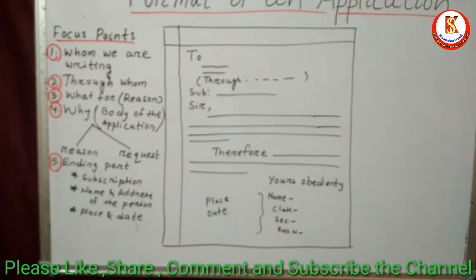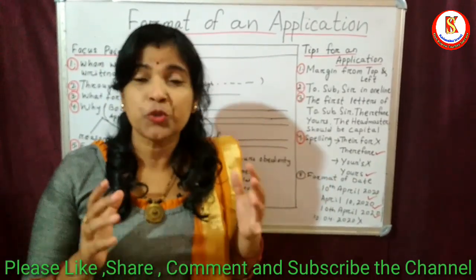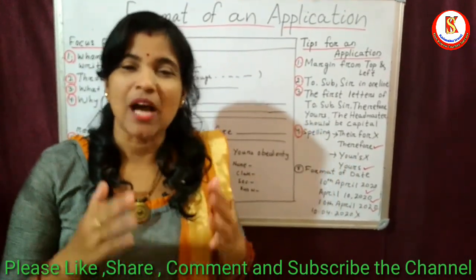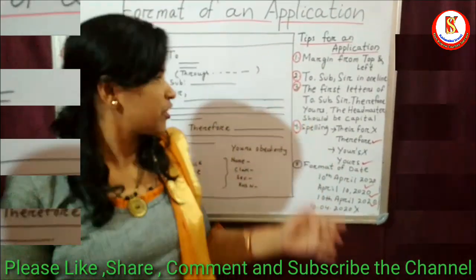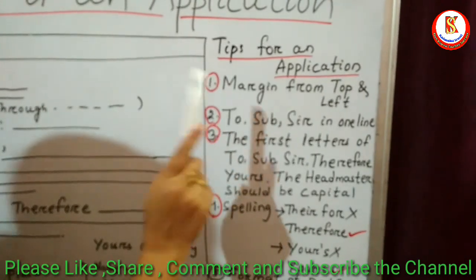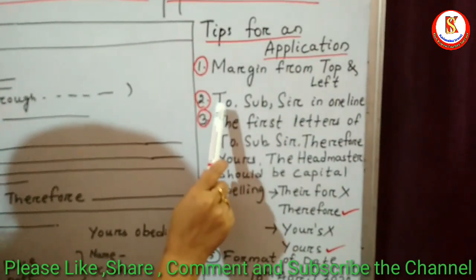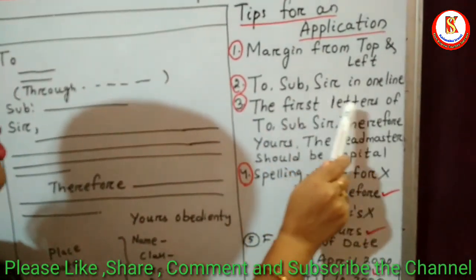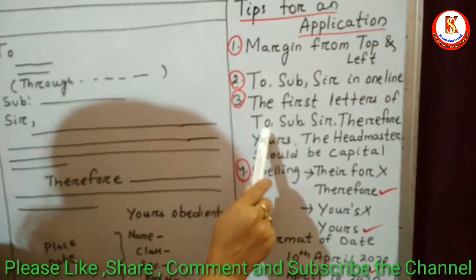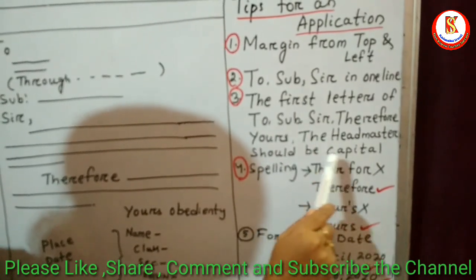Let us see the five basic tips to write a correct application. First is margin — margin should be given from the top and left side. Second, 'To' and 'Subject' should remain on a single line. Third, the first letters of important words — To, Subject, Sir, Therefore, Yours, and Headmaster — should be capital letters.